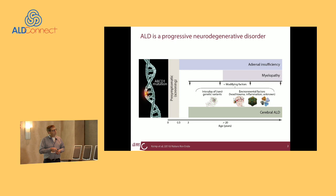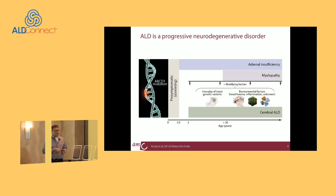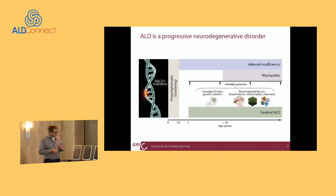A mutation in ABCD1, which causes biochemical abnormalities and elevated very long chain fatty acids, eventually results in almost all cases in adrenal insufficiency and myelopathy. Cerebral ALD is caused first of all by the mutation in ABCD1, but just the mutation does not necessarily lead to cerebral ALD. Other factors are involved — genetic factors in genes not yet identified, and also environmental factors. There are cases of boys who had trauma and afterwards developed cerebral ALD. Males with adrenal insufficiency and myelopathy are also at risk to develop cerebral ALD at any time, and we cannot predict that.